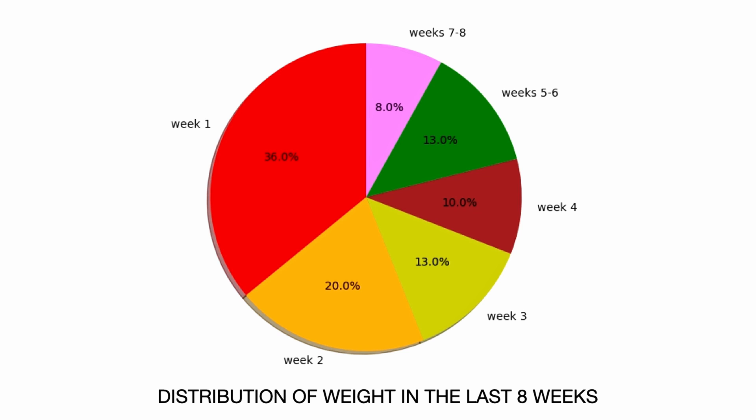The idea is that each day has an associated weight, and the more recent the day, the higher the weight. If we consider the sum of weights for the first week, we obtain 36%. Week two gives 20%, week three 10%, week four and so on — week seven and eight weigh only 8%, very little compared to the first week. Therefore, Spotify computes not a standard average of streams but a so-called weighted average.